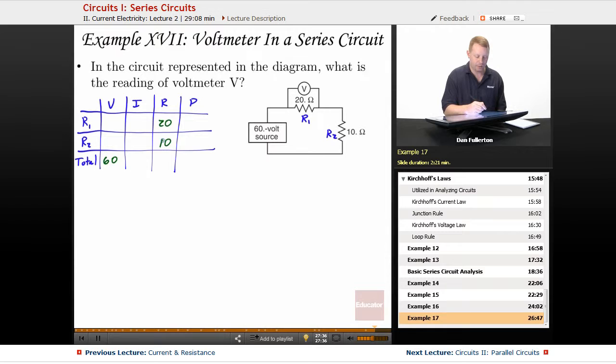So once we've done that, we know that the total resistance in our circuit is the sum of the individual resistances because it's a series circuit, 30 ohms.